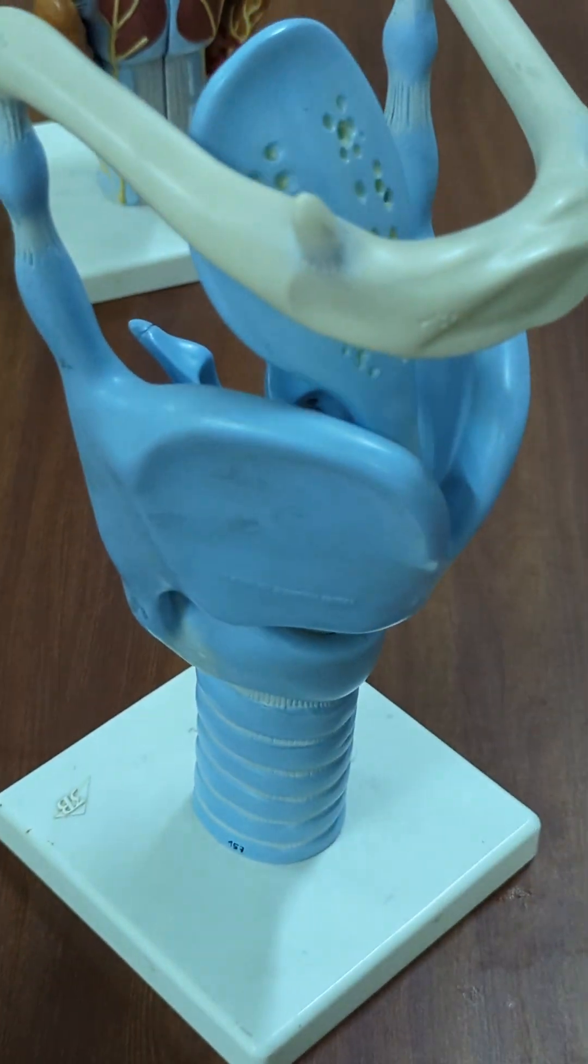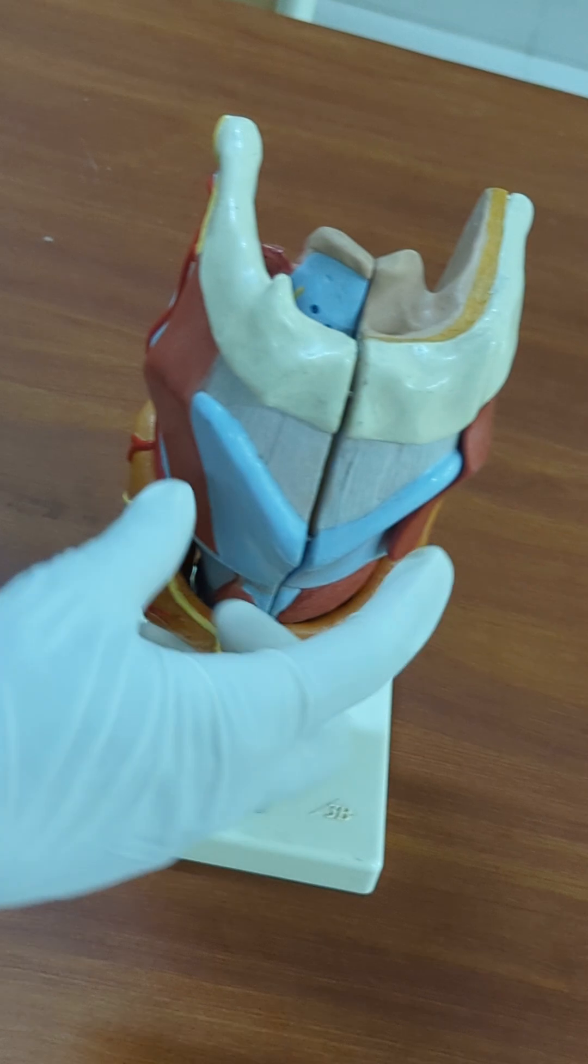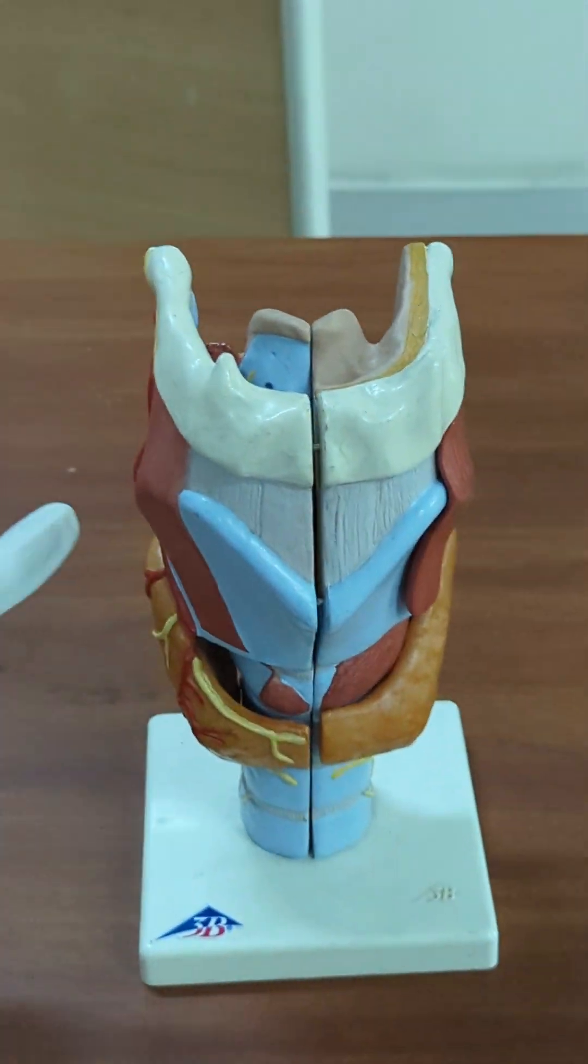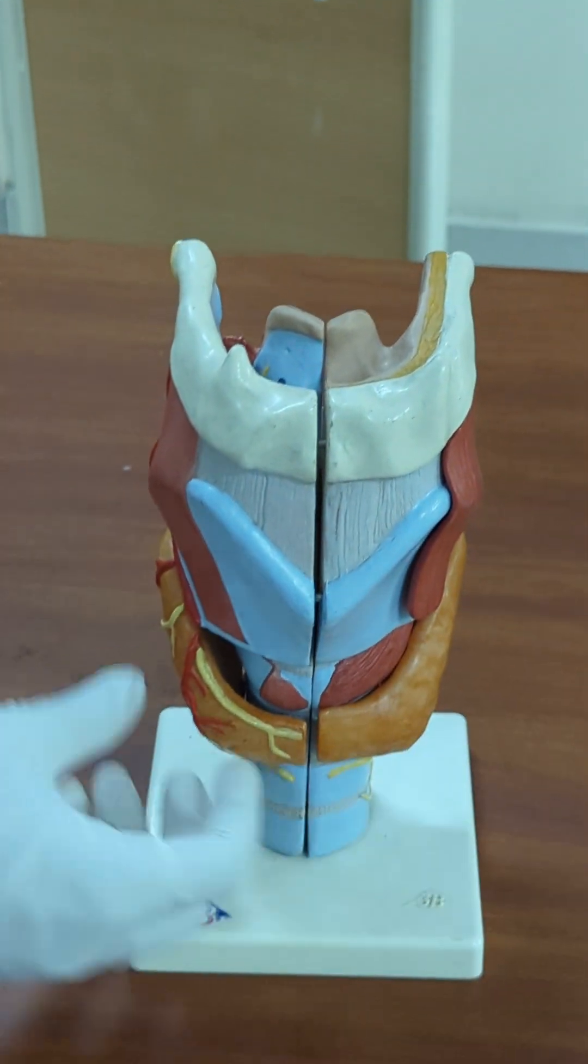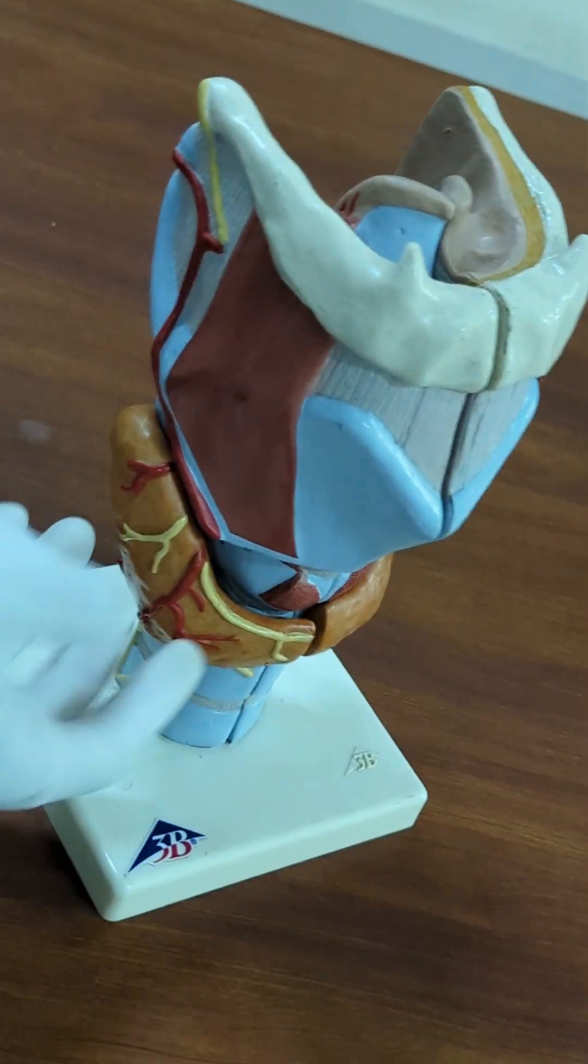And here we have the larynx, again this is the thyroid cartilage, hyoid bone, this is the strap muscle, this is the thyroid gland, like one of the most important glands in the body.